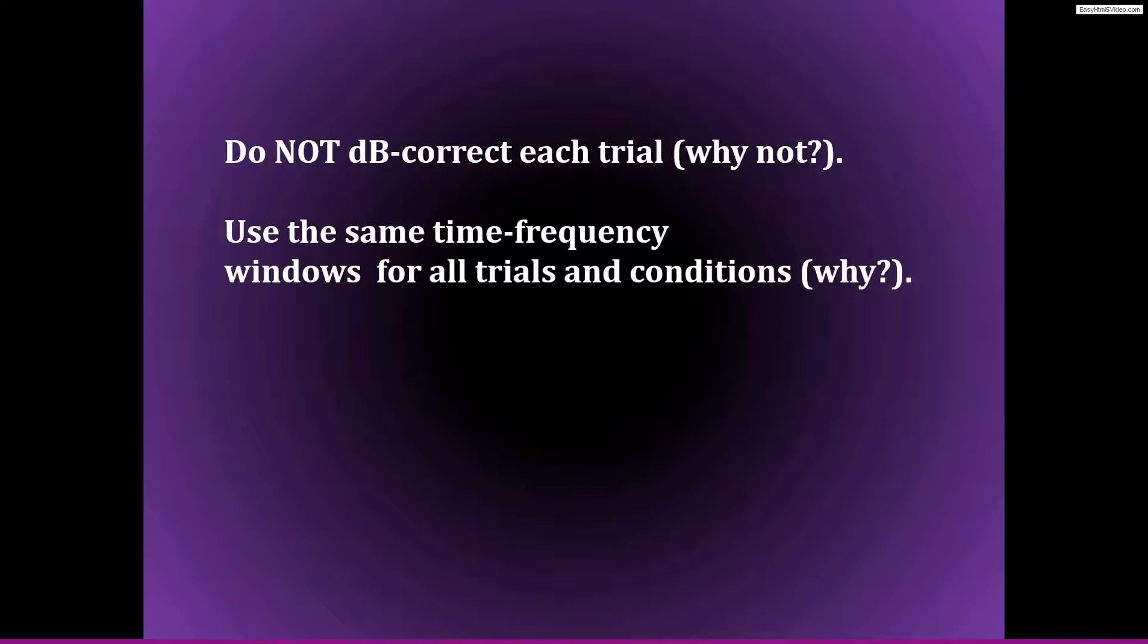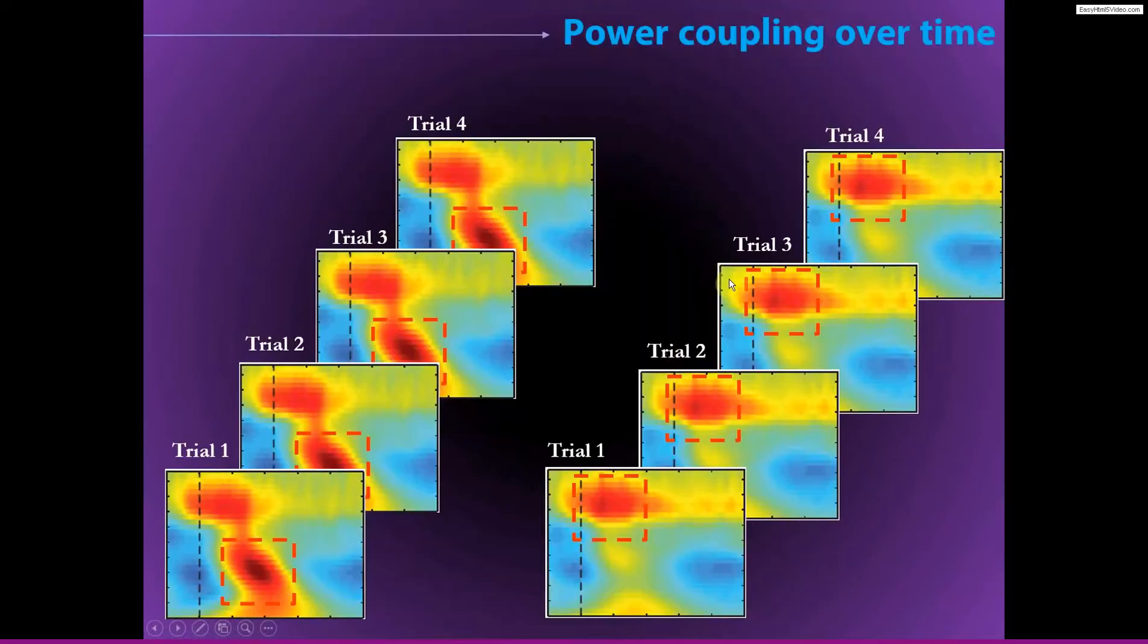So it's generally not a good idea to apply a decibel correction or any other kind of non-linear normalization at the single-trial level. This is because these non-linear normalization methods can be sensitive to outliers or to unusually small or large values. So it's a good idea not to compute any normalization or maybe just a linear baseline subtraction. And you should use the same time-frequency windows for all trials and conditions. This time-frequency window should be exactly the same on every trial. That's useful because it will prevent any biases and help keep the analysis robust to single-trial noise.